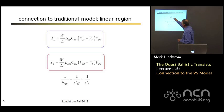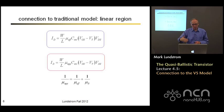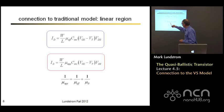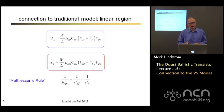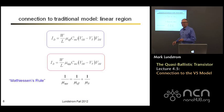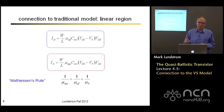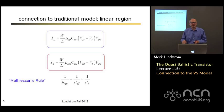We have the traditional model in terms of the real scattering-limited mobility of electrons in the inversion layer, and we have the scattering model that appropriately captures both the long-channel scattering-limited case and also the very short channel ballistic case, in terms of this apparent mobility. One over the apparent mobility is just one over the real total mobility plus one over the ballistic mobility.